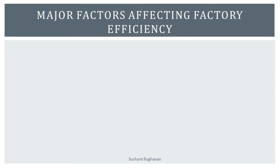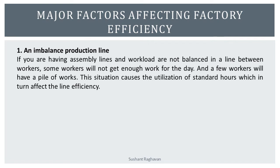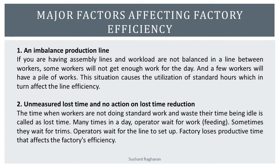Major factors affecting factory efficiency. First, an imbalanced production line: if assembly line workloads are not balanced between workers, some workers will not get enough work while a few will have a pile of work. This causes underutilization of standard hours, which in turn affects line efficiency. Second, unmeasured loss time with no action on loss time reduction: the time when workers are not doing standard work and waste their time being idle is called loss time. Operators often wait for work feeding, trims, or line setup, causing the factory to lose productive time.